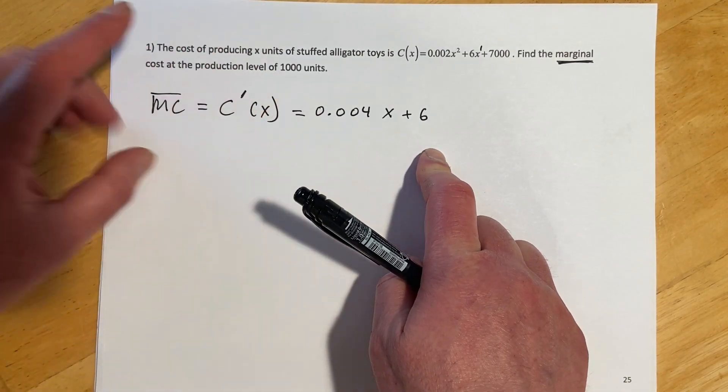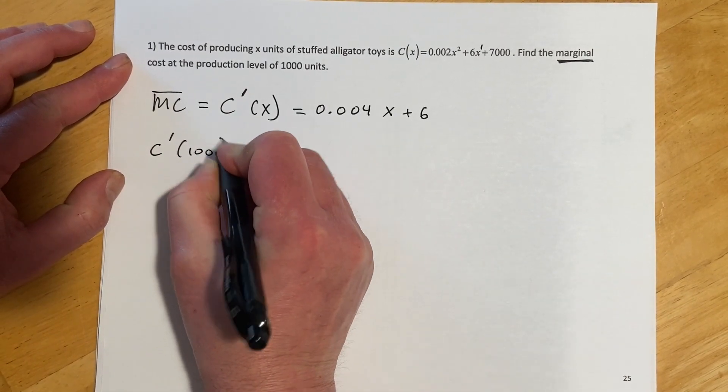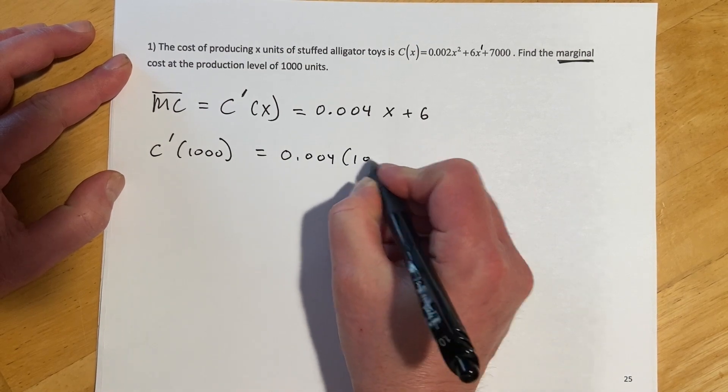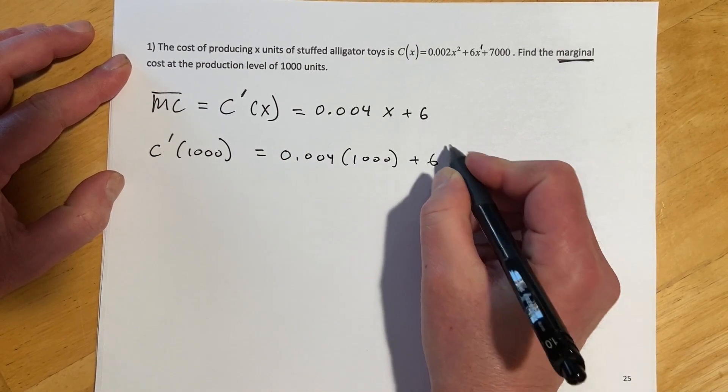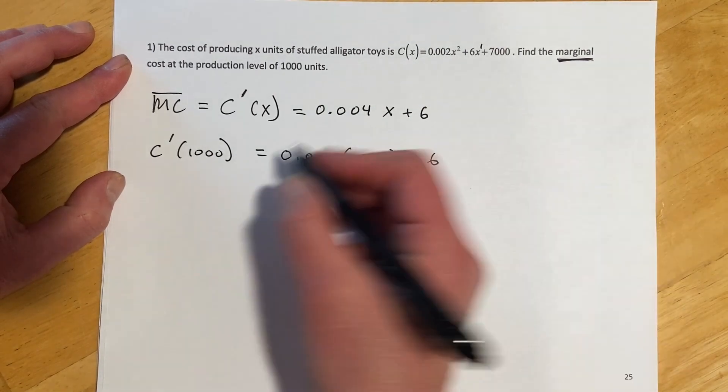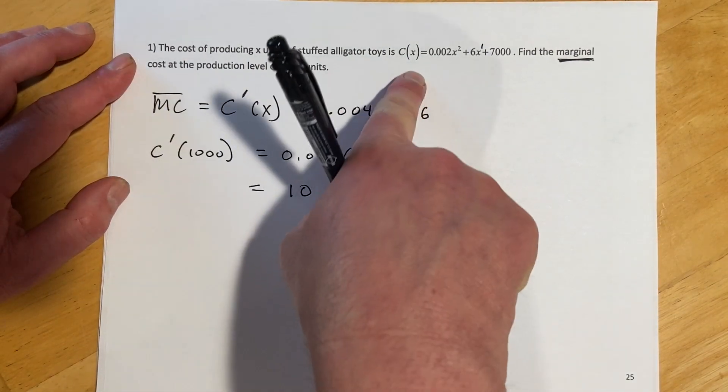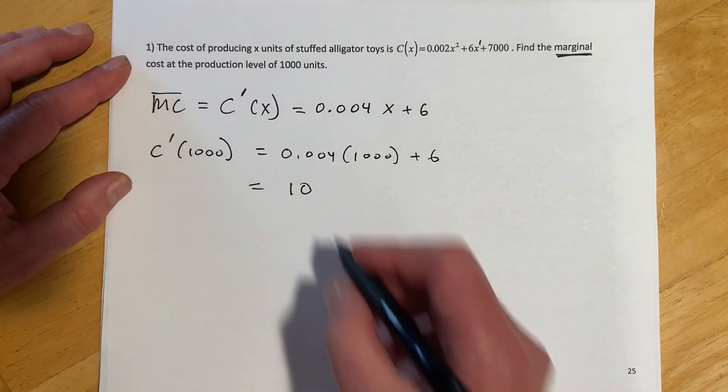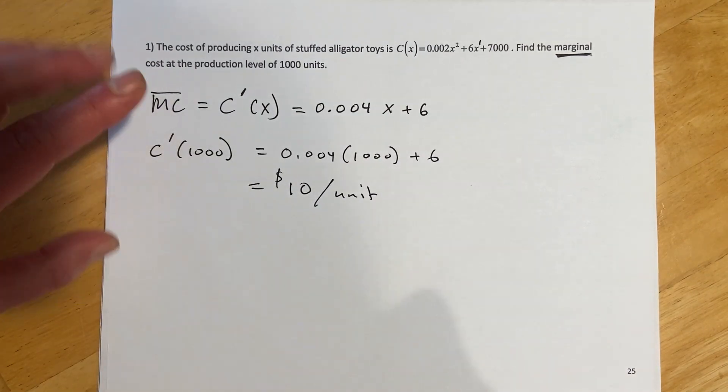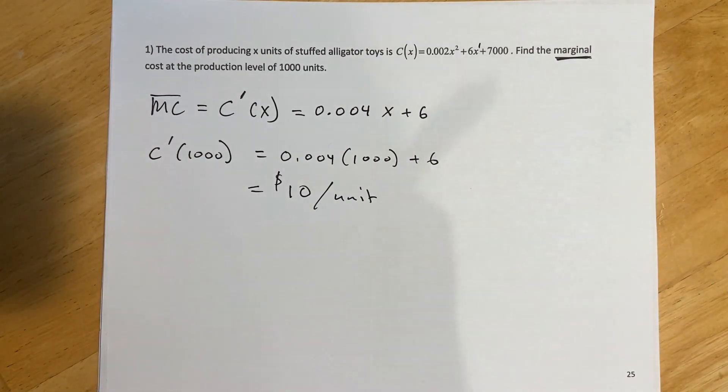And then we want to find the marginal cost of 1,000 units. So we'll say c prime at 1,000 and just plug in 1,000 there and then just throw that, actually that's 4 and 6, that's 10. So that one's not too hard to work out. So it looks like the cost to produce would be $10 per unit. And again, that's because marginal cost rate is giving us our cost per change in one unit.